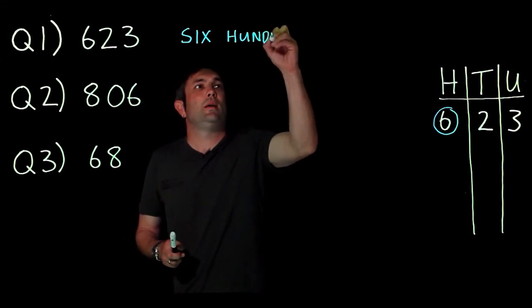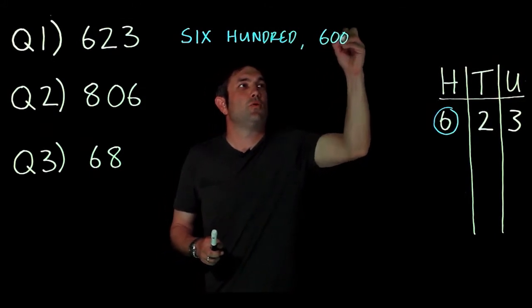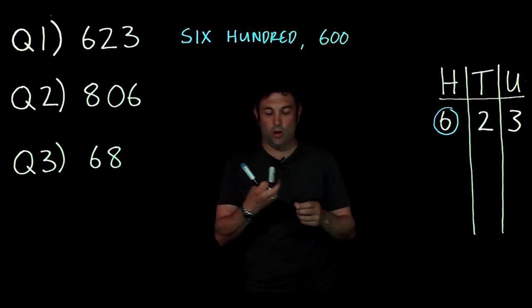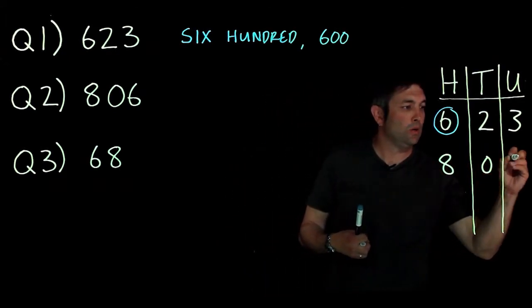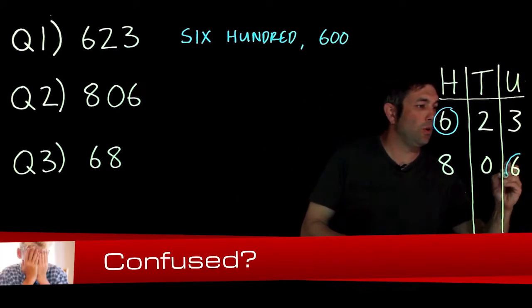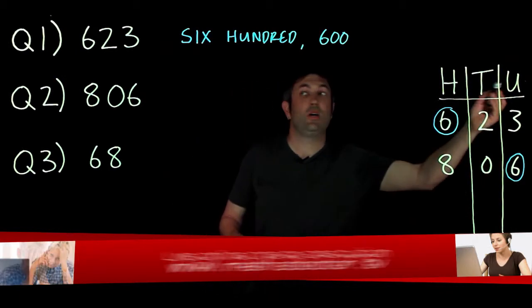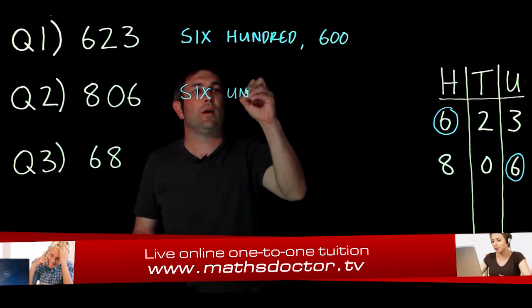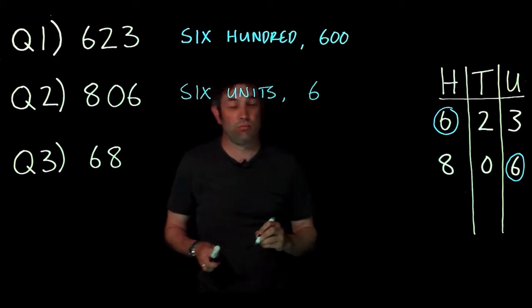Okay, now in the exam you probably wouldn't write that in words, you'd just write six hundred. Now looking at the next one, we've got 806, so I'm going to write 806. I'm going to circle the six again because that's the one I'm looking for, and what do we got? We've got six units, so that's six units. Once again, thinking about the exam, you will probably just write six.